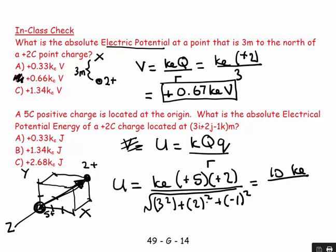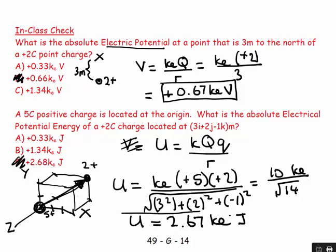That gives the square root of 9 + 4 + 1, which is the square root of 14. So U equals 10 ke over √14. Calculating: 10 divided by √14 gives approximately 2.67 or 2.68, so the answer is 2.67 ke joules, positive sign. Knowing the equations — not so bad. There we have it.